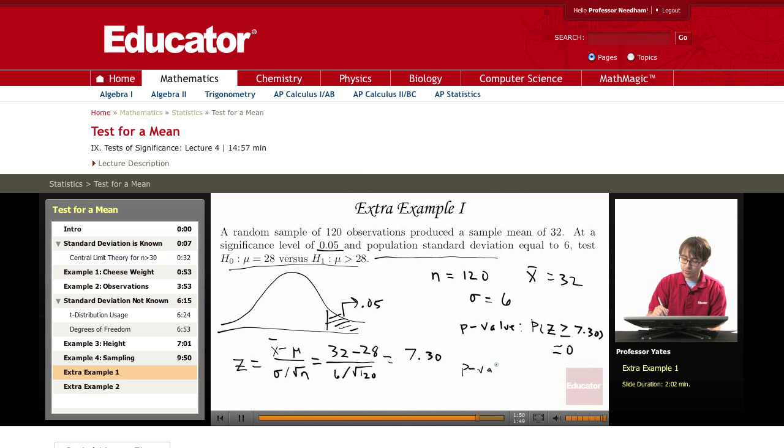Is my p-value less than or equal to alpha? The answer is yes. So what would I conclude? My decision is to reject the null hypothesis.